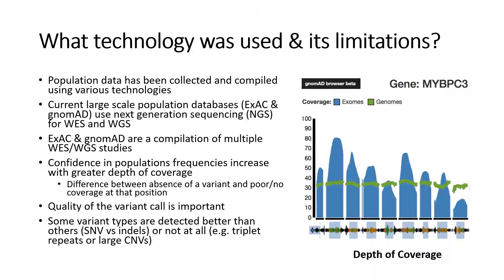NGS data can call a variant with varying levels of confidence, some being low quality that may or may not be real, and others with high quality that have a high likelihood of being real. In general, the ExAC and gnomAD browsers will only show variants of high quality. As with any technology, some variant types are harder to detect than others. For NGS, insertions and deletions can be challenging depending on the size and location, and in many instances triplet repeat expansions or very large CNVs cannot be reliably detected or accurately called. By understanding the basics of the technology used and its limitations, it is easier to interpret the significance of a variant frequency, or more importantly, the absence of a particular variant.